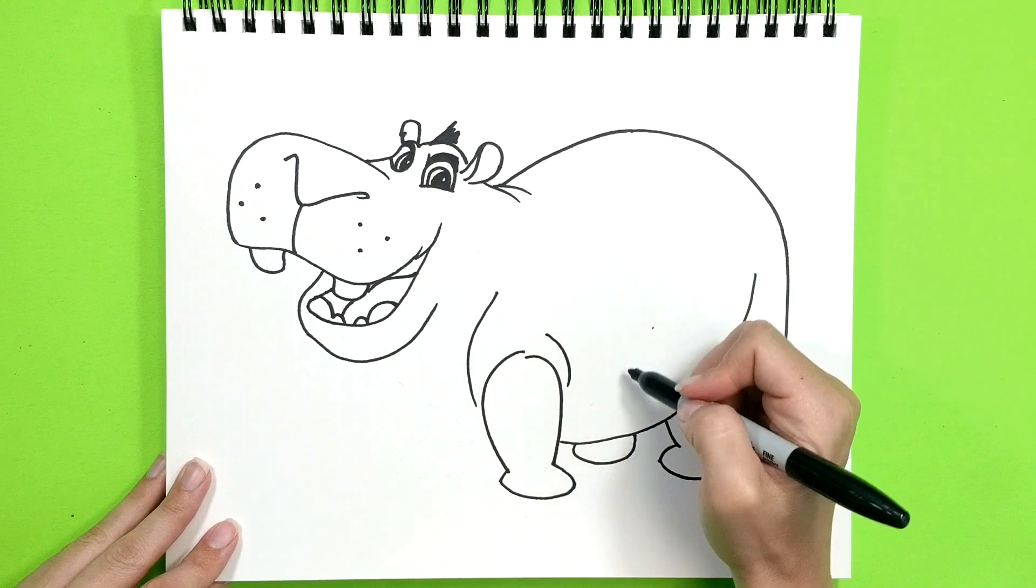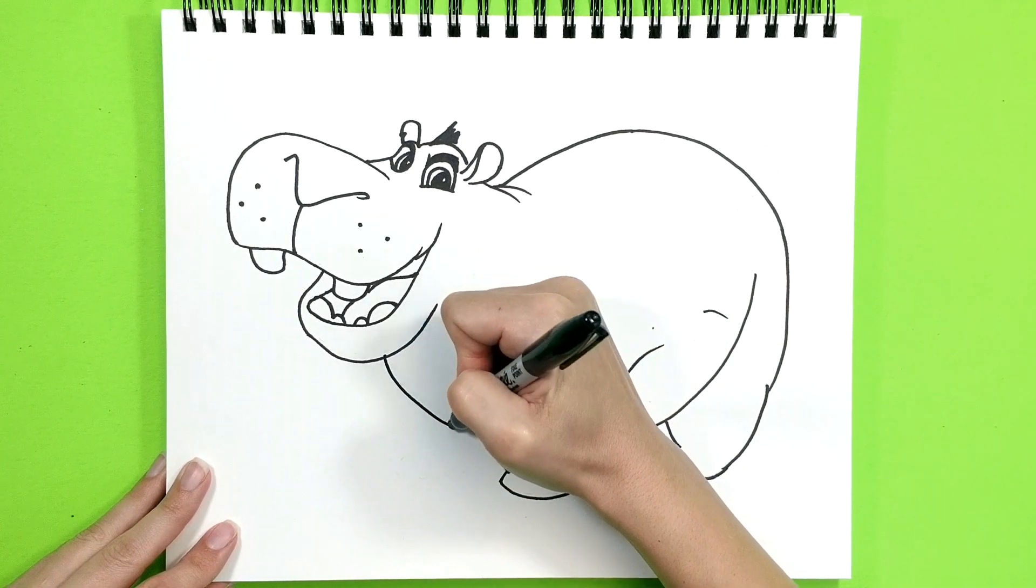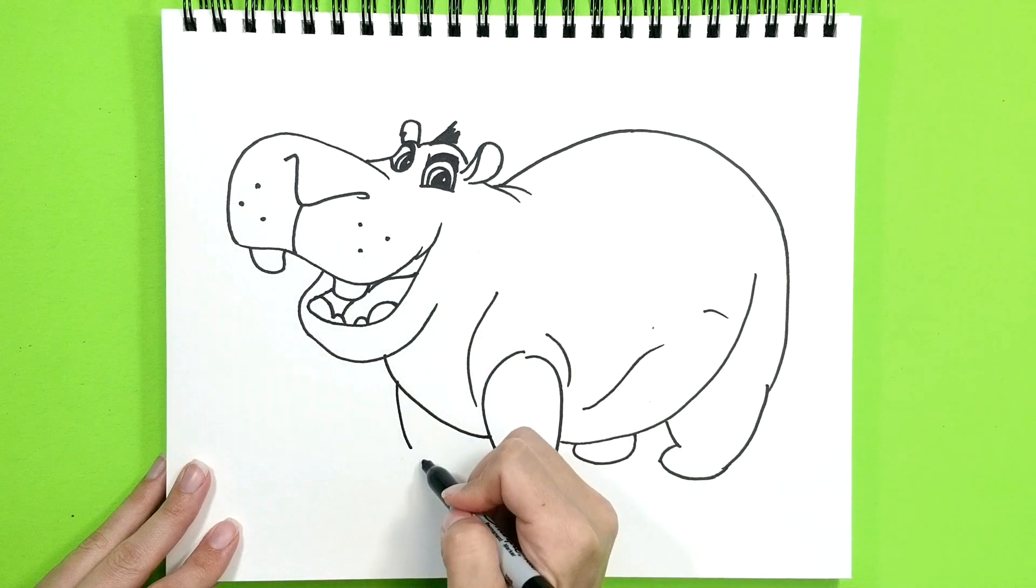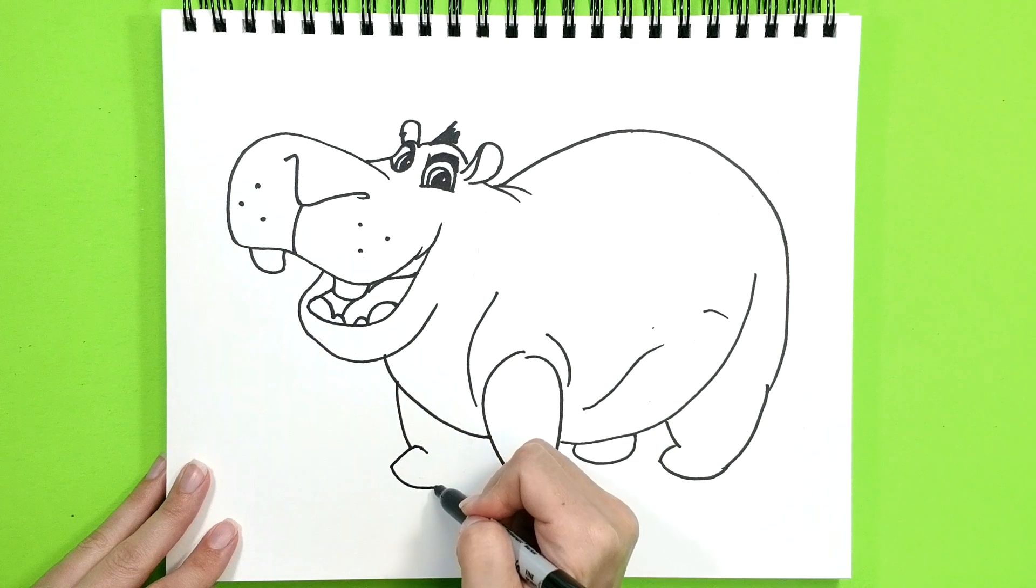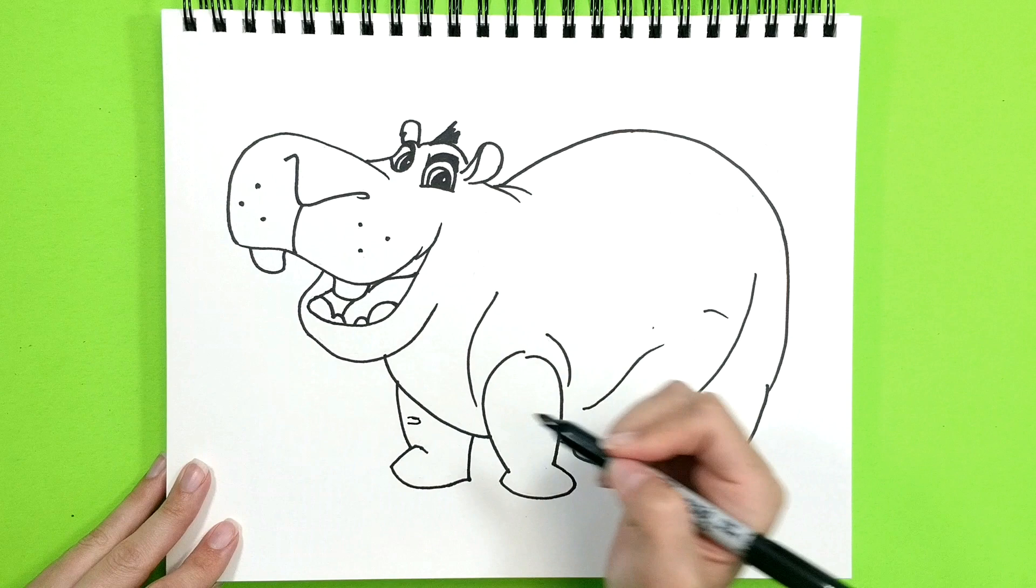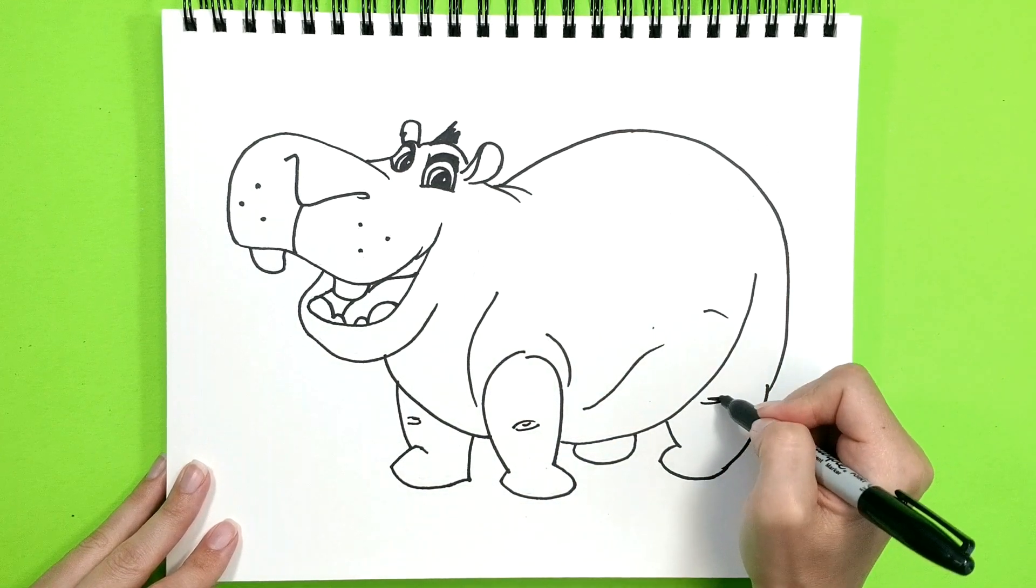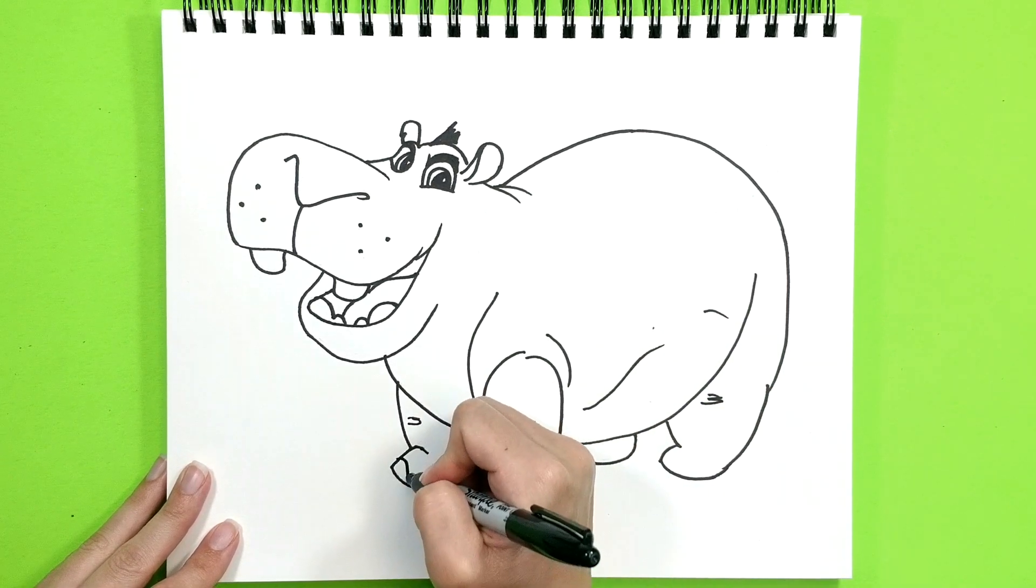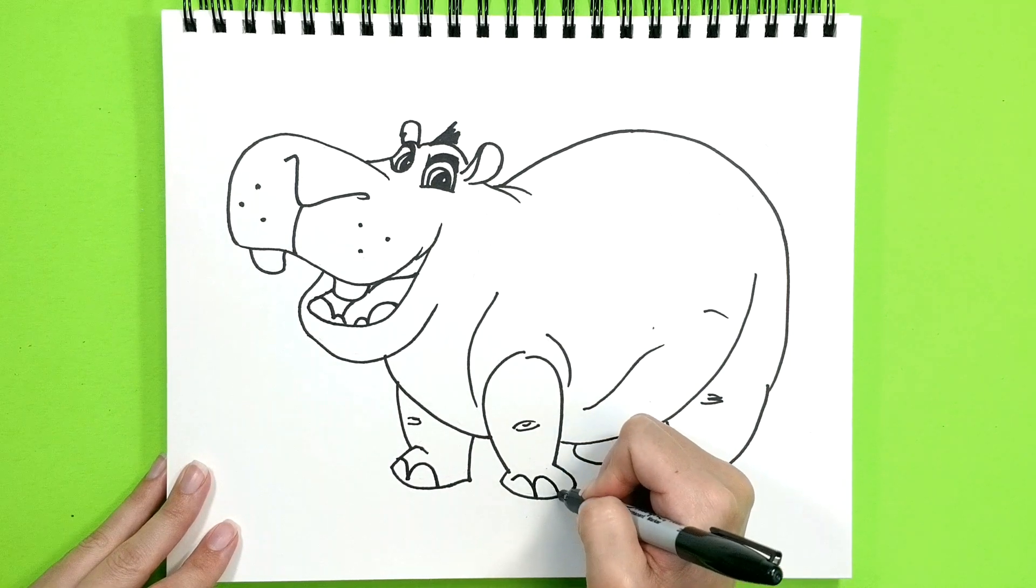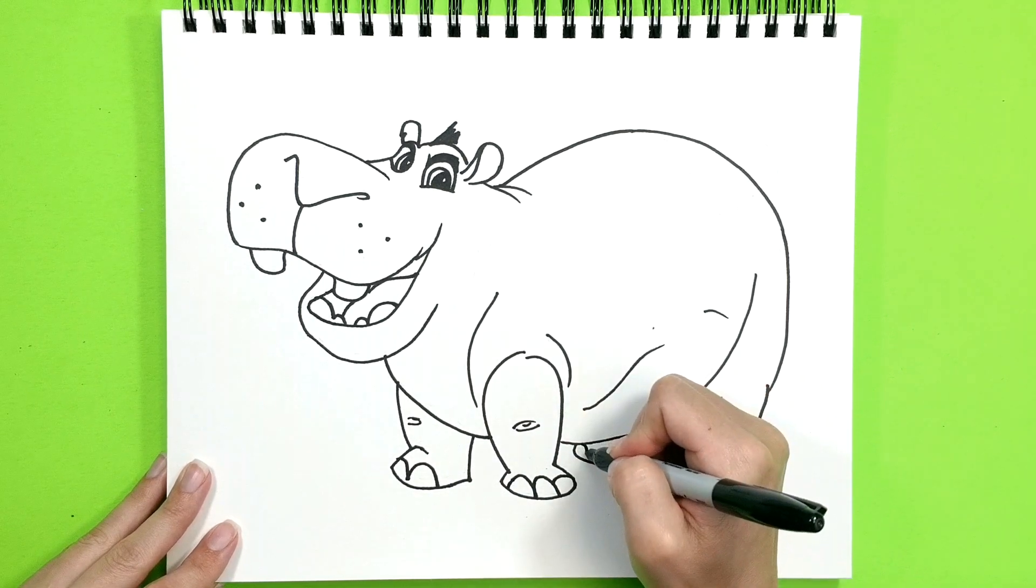It is his second foot sticking out right there, and his front legs. He's got a lot of wrinkles too, you know, hippos. And his chest. And last foot. That's where his knees are and the bottom of his feet.